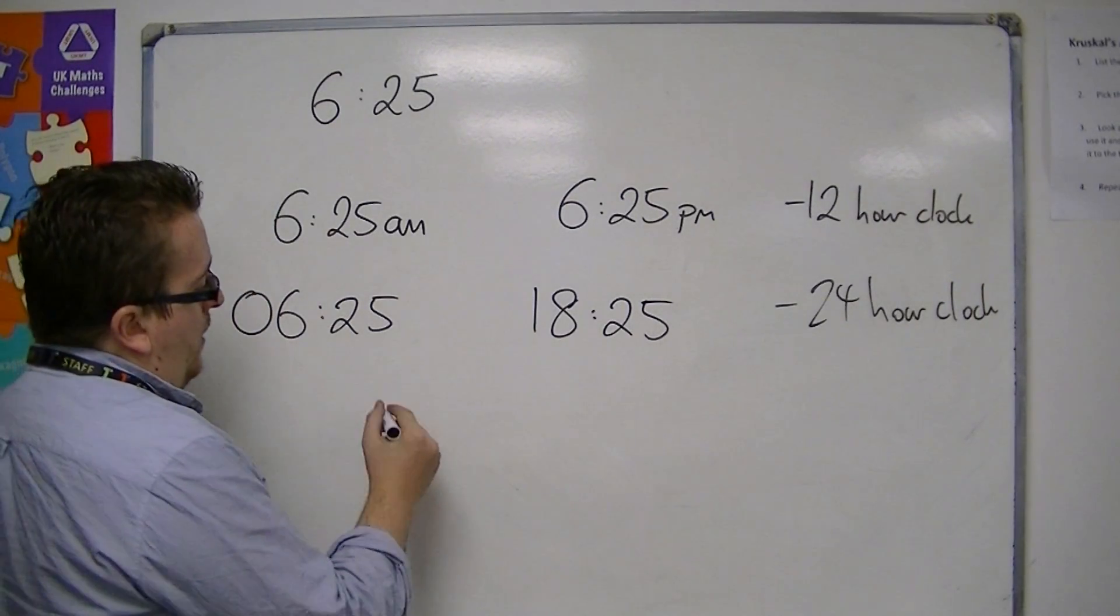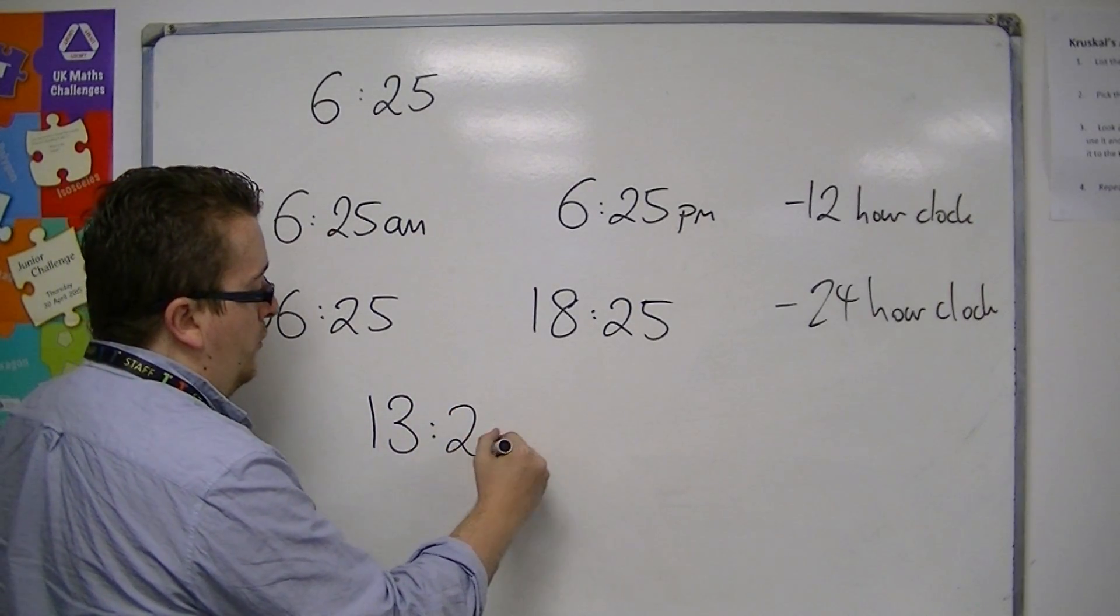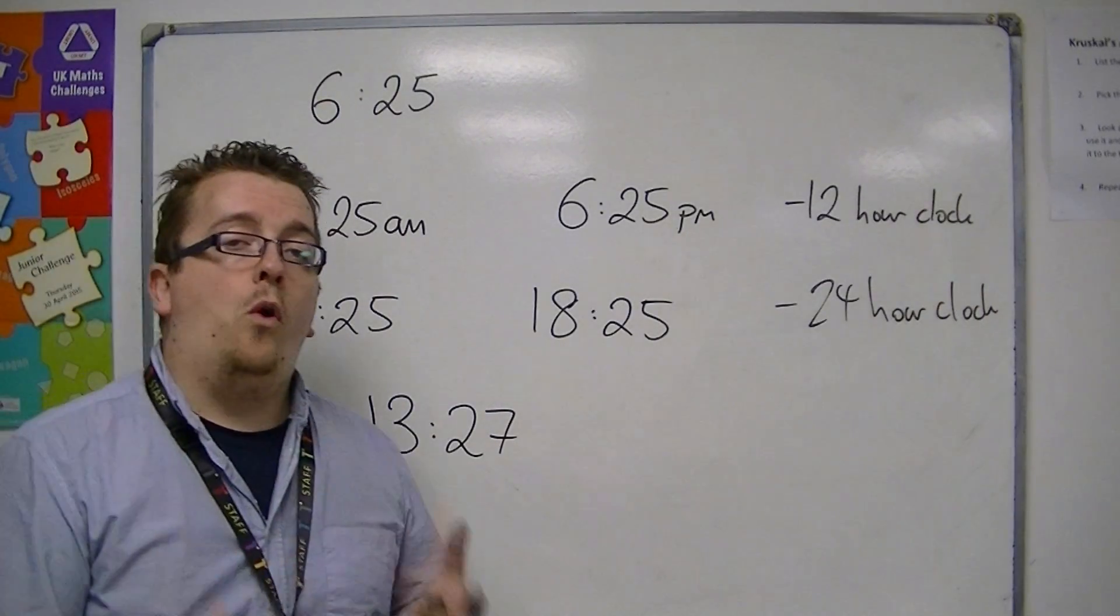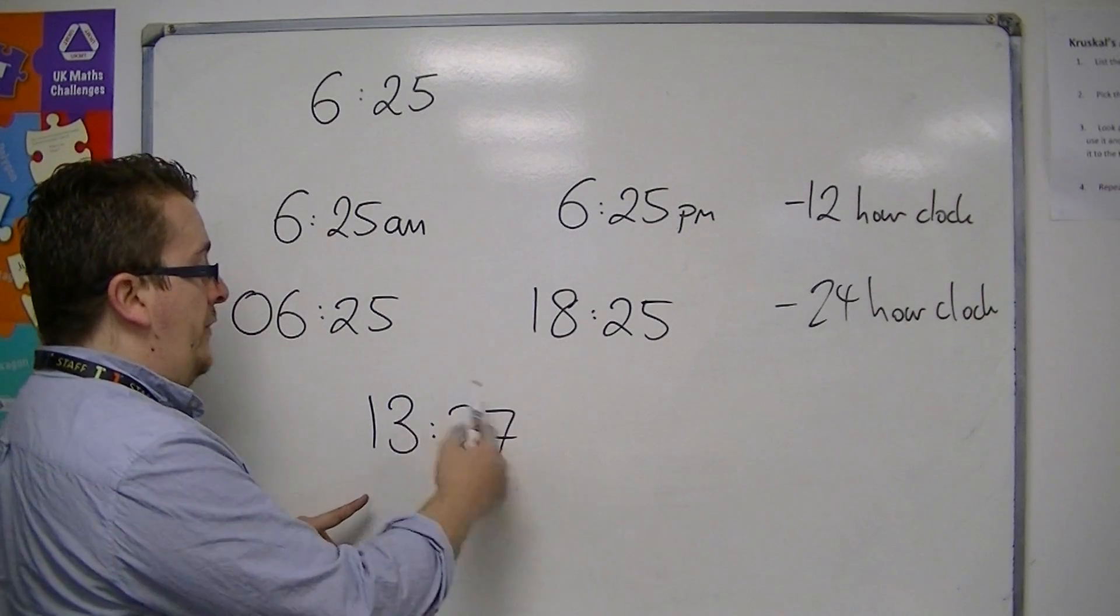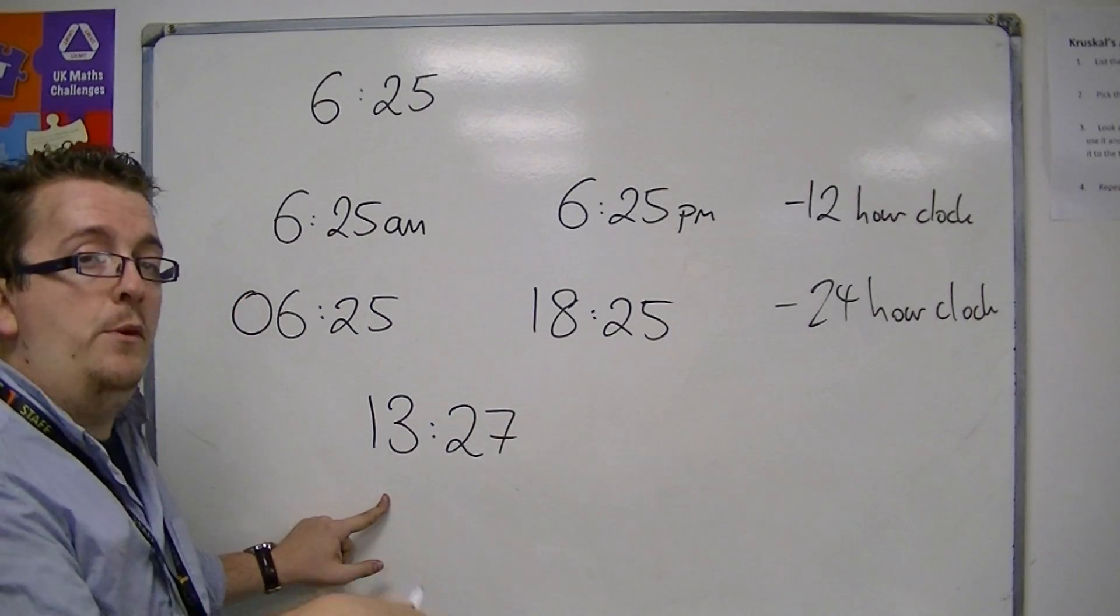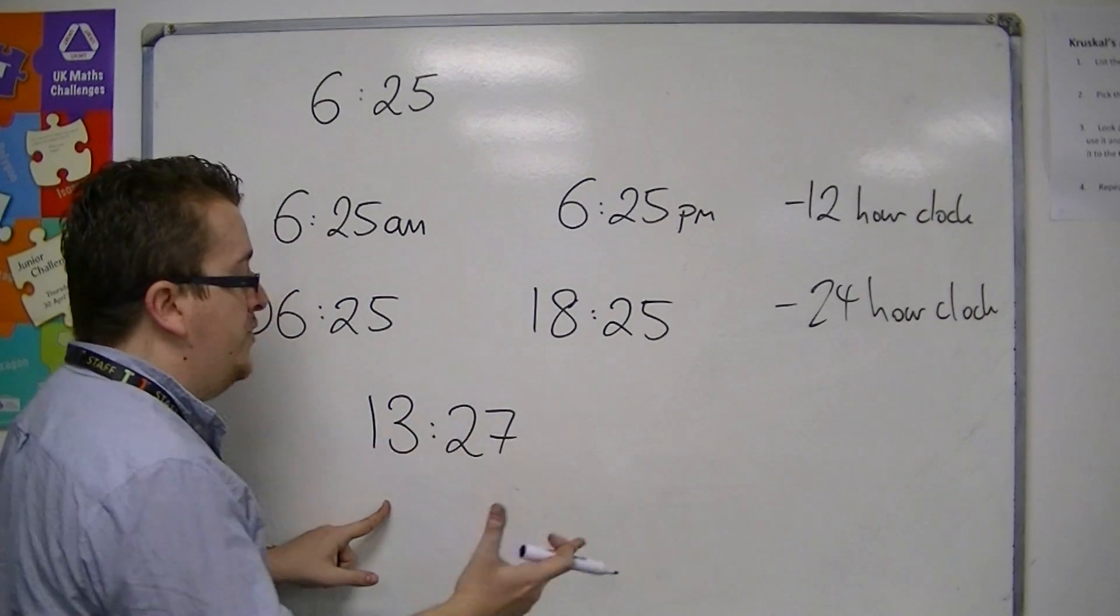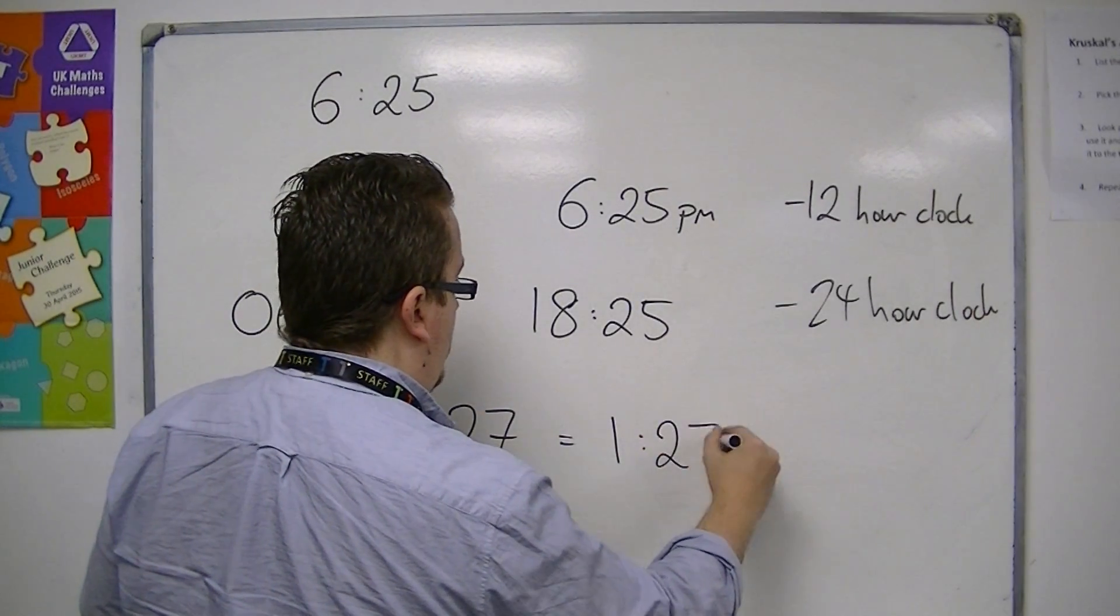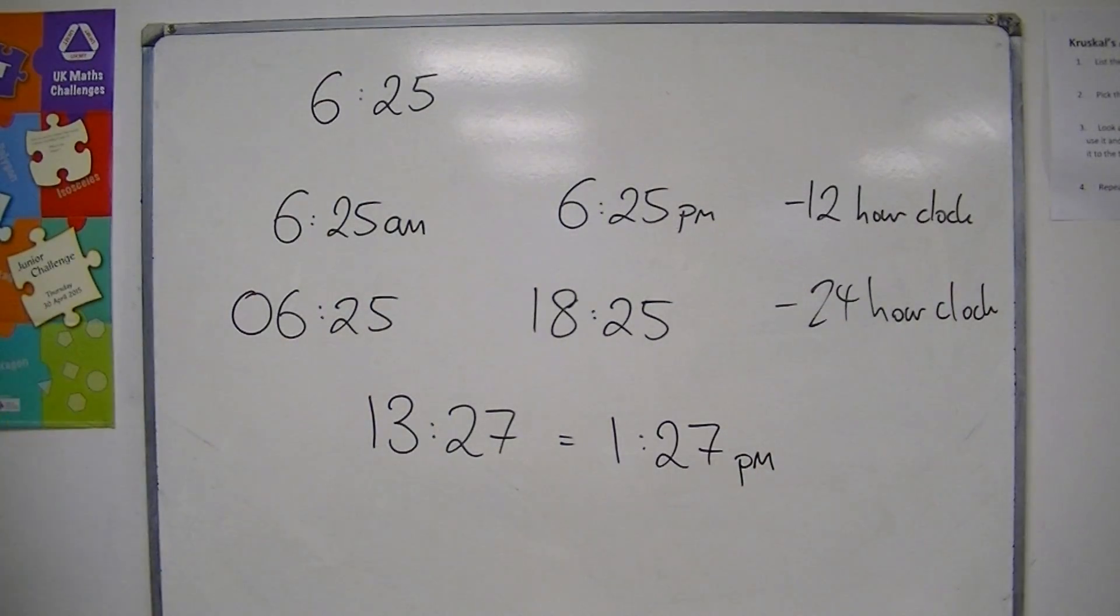So if I wrote down that the time was currently 13.27, and you need to know what that time was in 12 hour clock, well, because I've gone past the 12, it's into the second half of the day, we're now into p.m., and we're 1 hour and 27 over the 12 o'clock. So this is 1.27pm in 12 hour clock. OK?